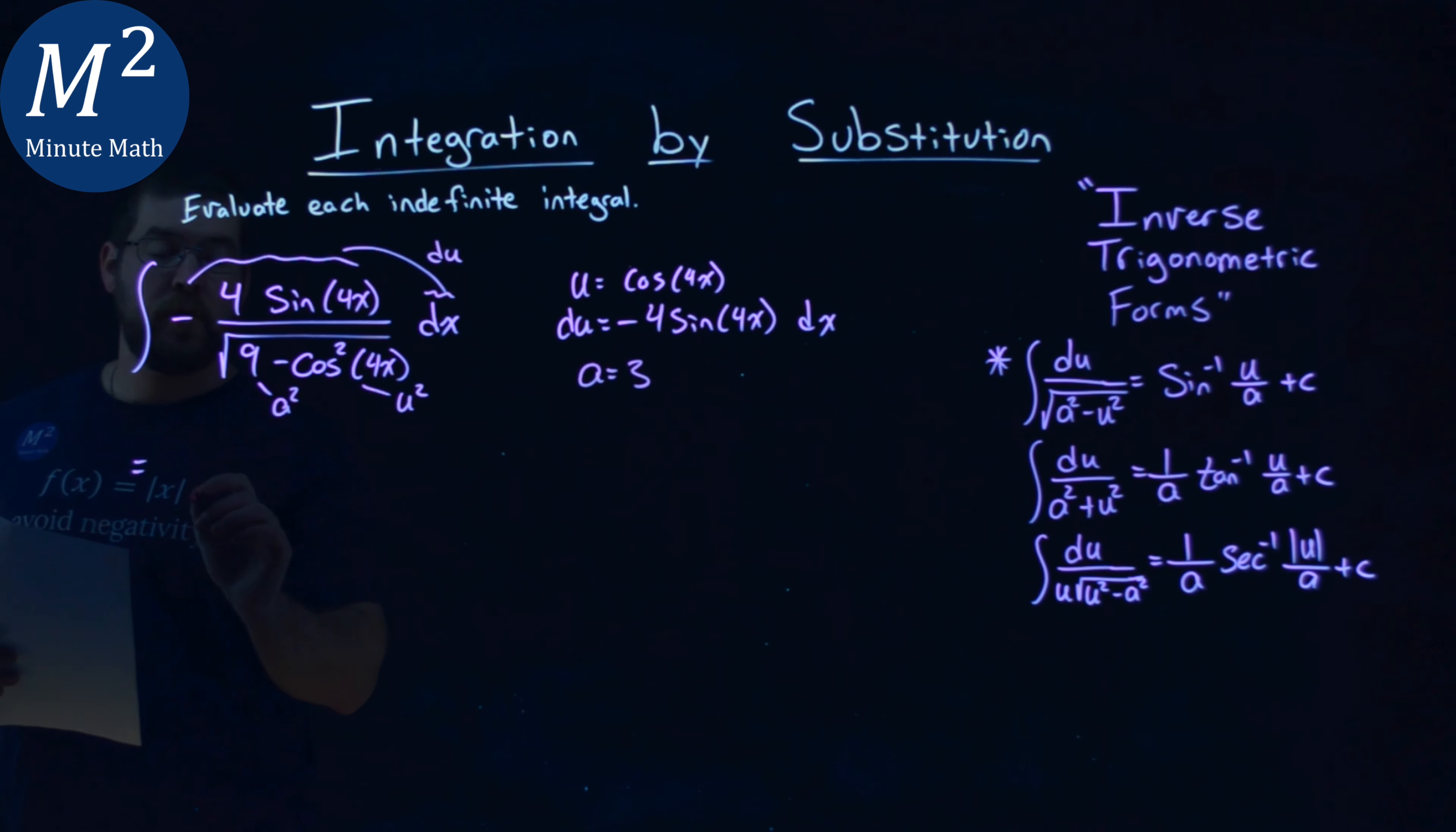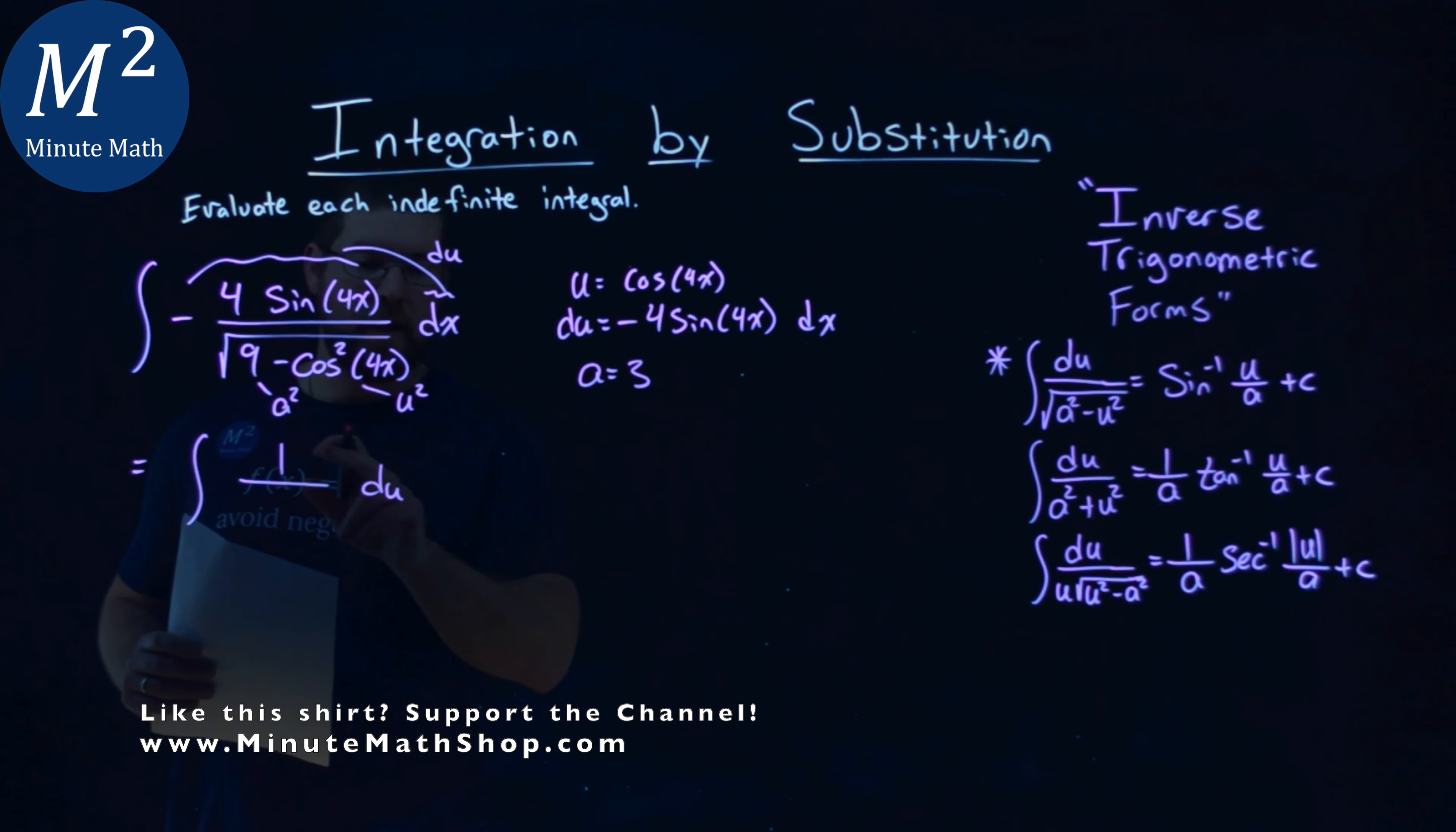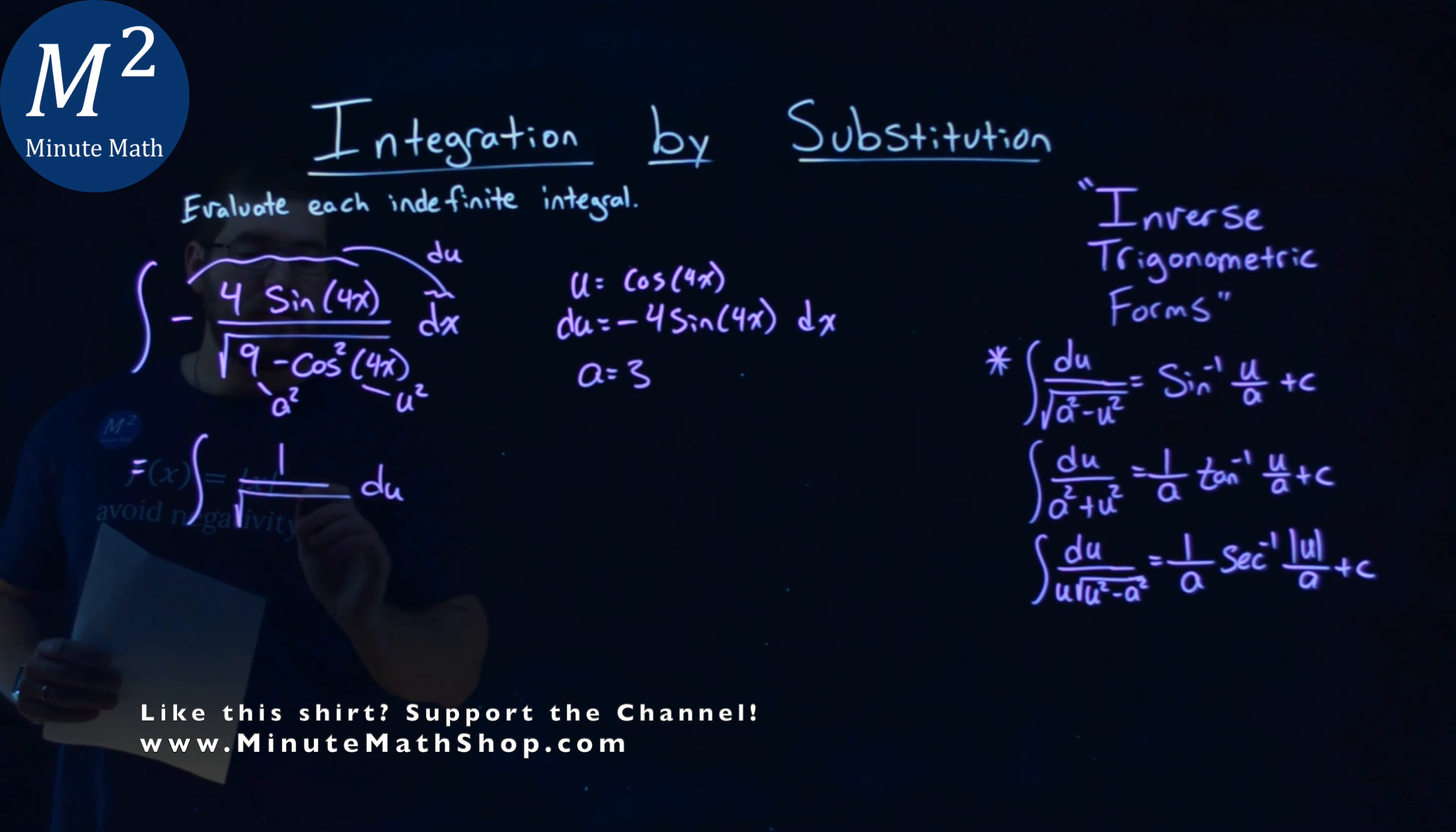Let's write this in terms of u and du. We have the integral of du - remember, negative 4 sine of 4x dx is my du, lines up great - over the square root of my a-value squared, which is 3-squared, minus my u-value squared, u-squared.